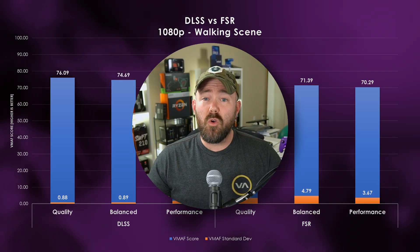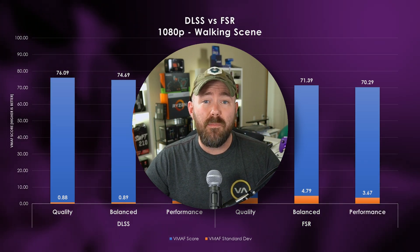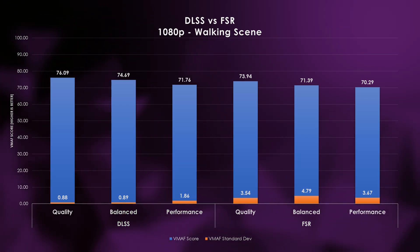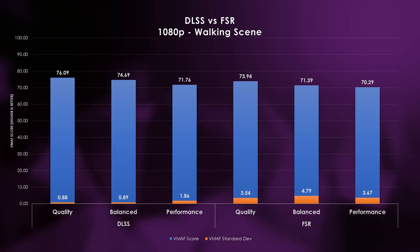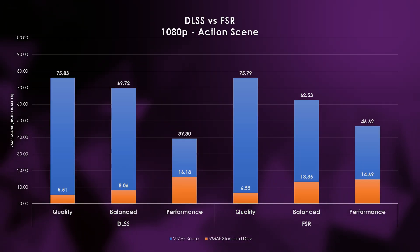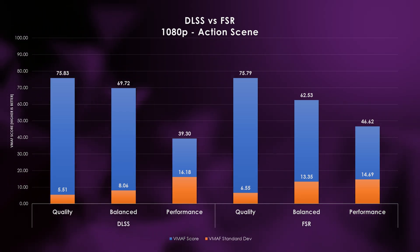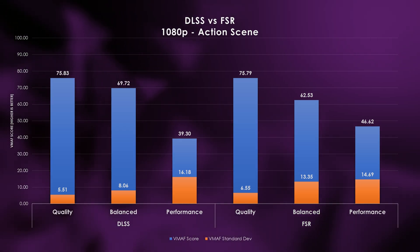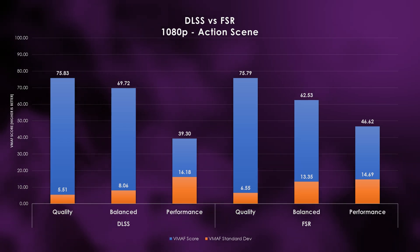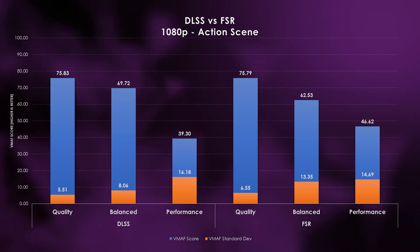FSR scores are a bit lower: 74 in quality mode, 71 in balanced, and 70 in performance — effectively the same. These scores are considered good but just shy of excellent. The standard deviation bars are interesting though: FSR's VMAF score is slightly more noisy, dipping into the 60s in all three modes, while DLSS only sees potential issues in performance mode, where rendering resolution drops to 540p. In the action sequence, DLSS quality mode maintains a similarly good result of 76, though standard deviation can dip into the 60s. In balanced mode we land shy of 70.